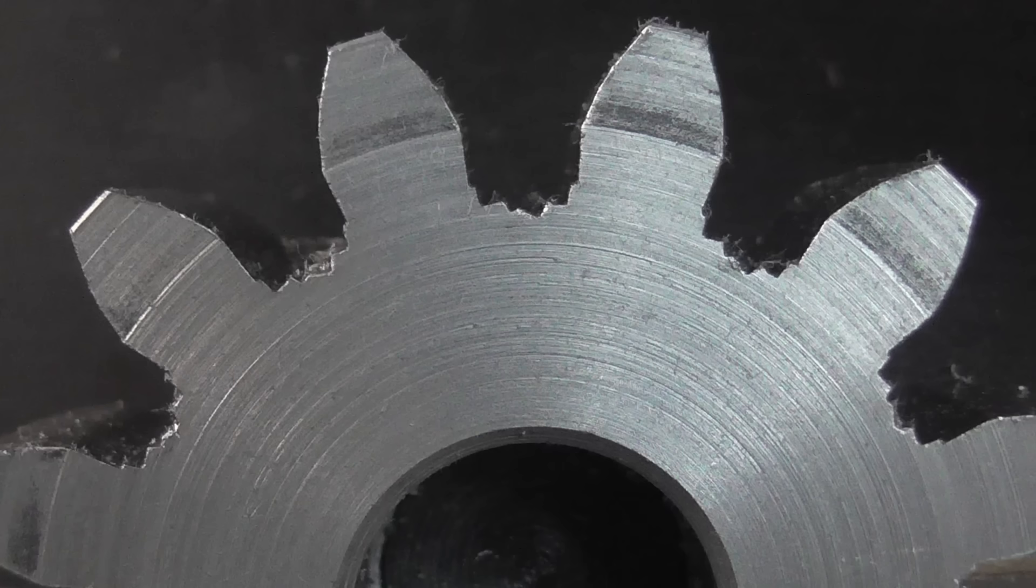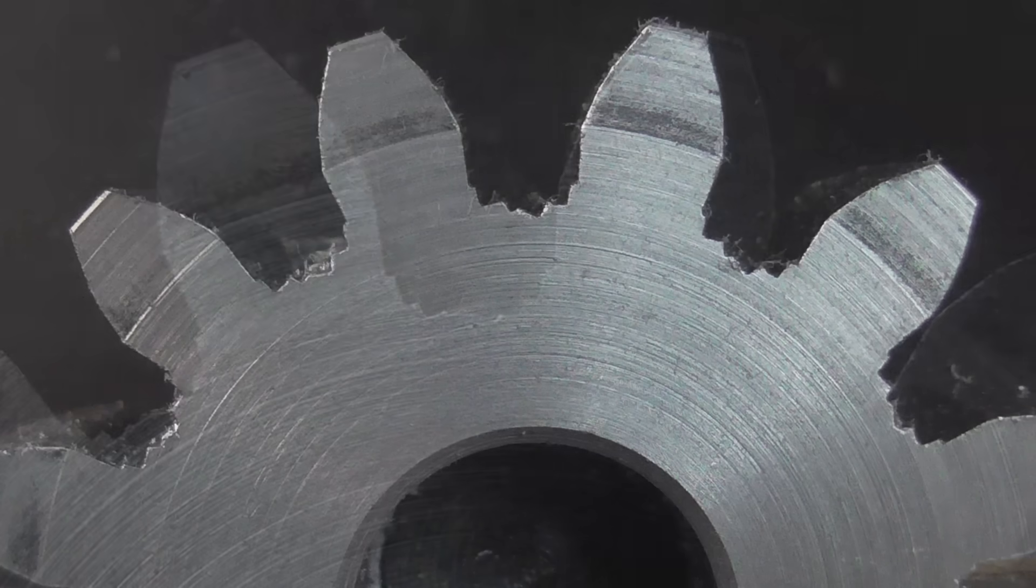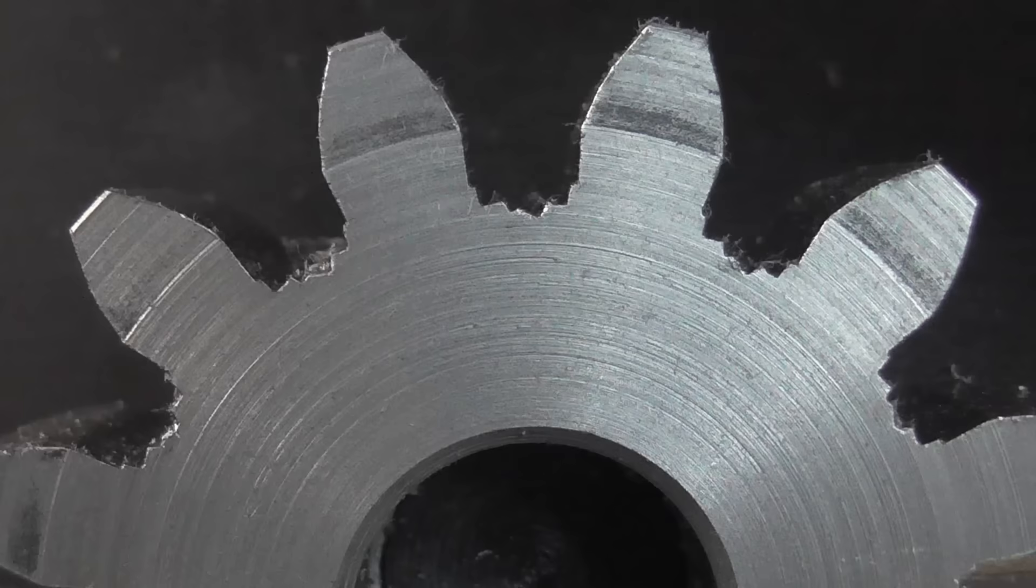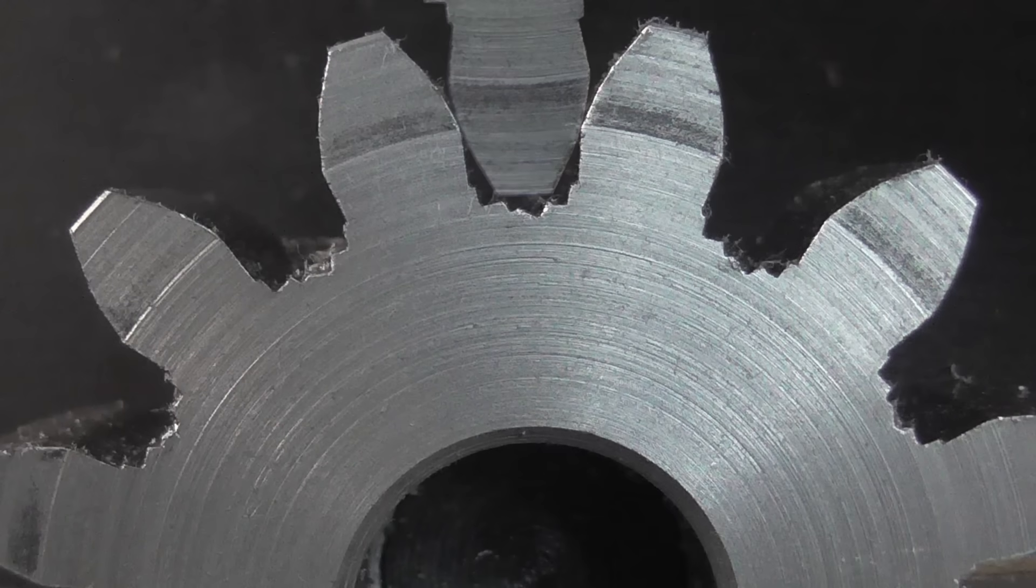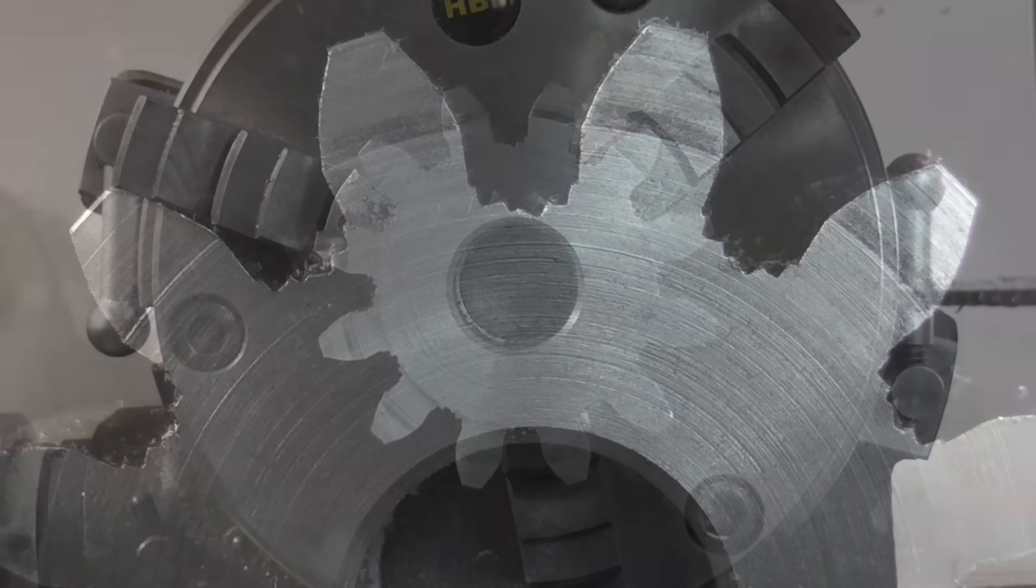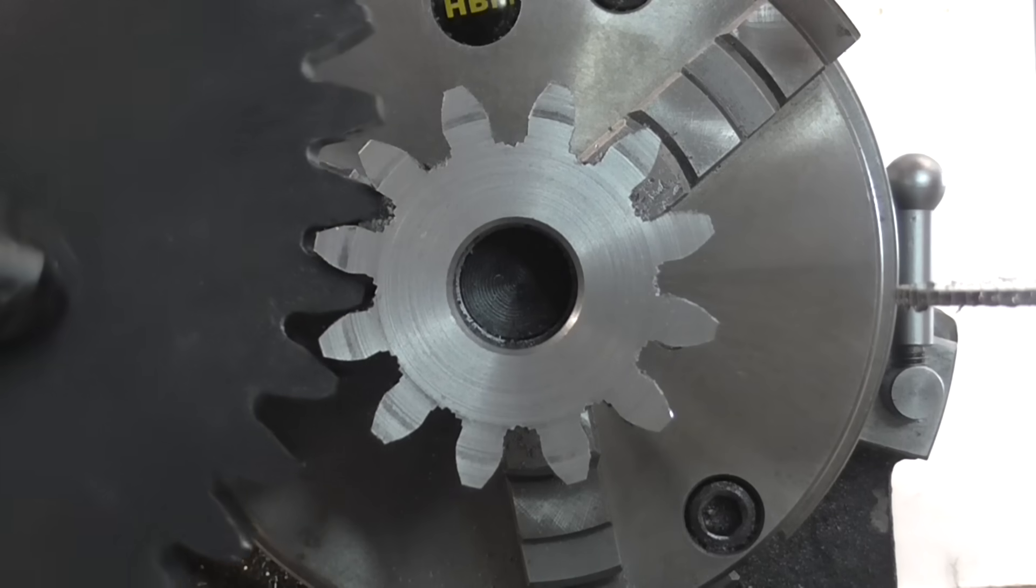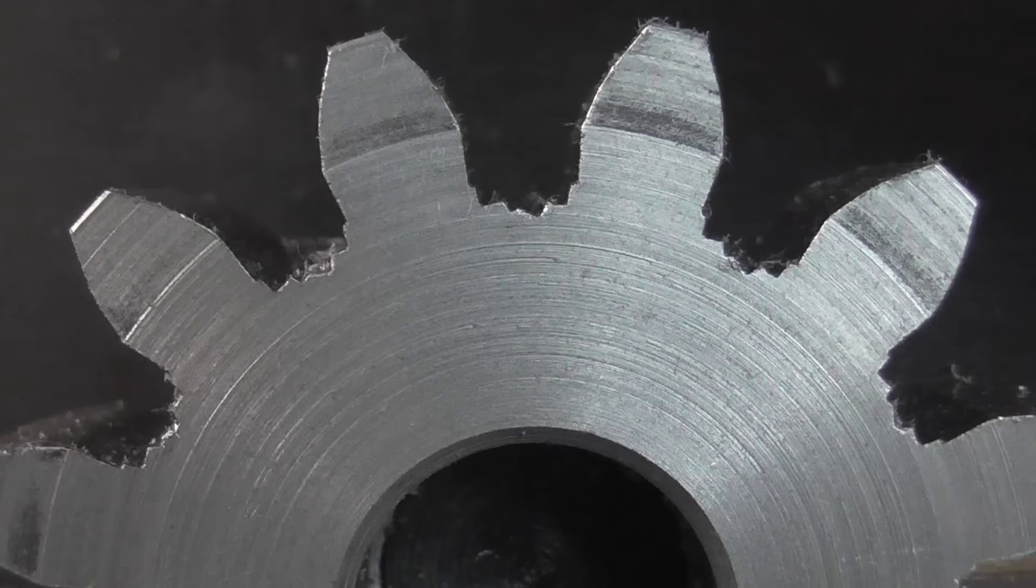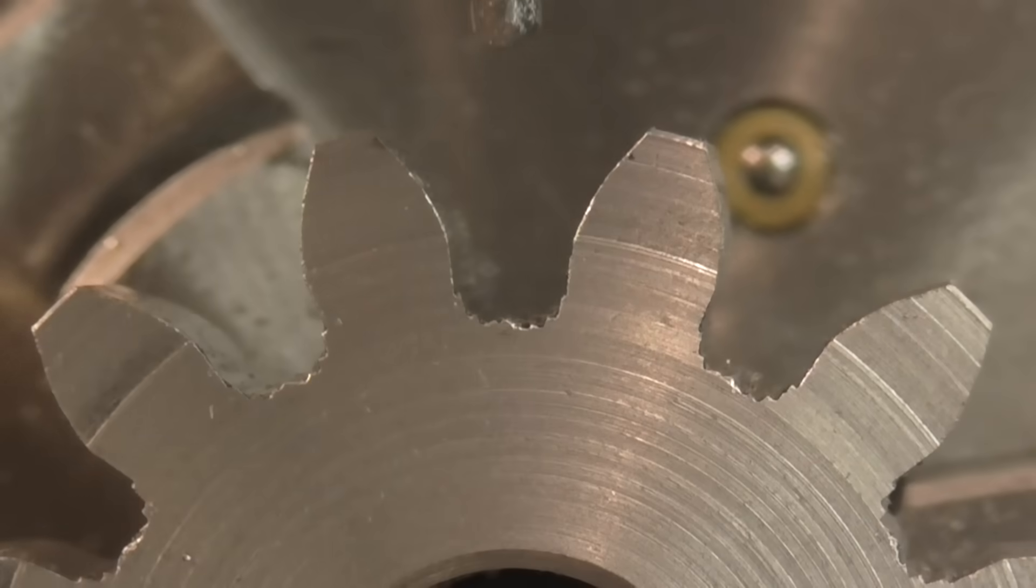It's looking quite close now, but the root of the tooth is still ragged due to the saw having sharp square edges. This part of the gear won't actually make contact with other meshing gear teeth. But it looks unsightly, and the square corners could concentrate forces leading to failure. So I'm cleaning this up with a small ball-nosed end mill.